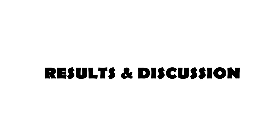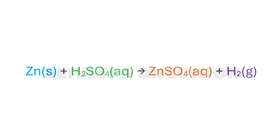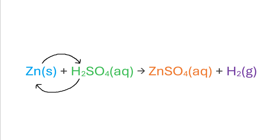Results and discussion: the reaction of zinc metal with dilute sulfuric acid can be summarized by the chemical equation shown. The end products formed are zinc sulfate and hydrogen gas. Since hydrogen gas is an odorless gas with a neutral pH and burns with a characteristic pop sound, the results of the investigative tests confirm that the gas is indeed hydrogen. In this reaction, zinc displaces hydrogen from the acid to form its aqueous metal salt — zinc sulfate — while the displaced hydrogen is released as hydrogen gas.